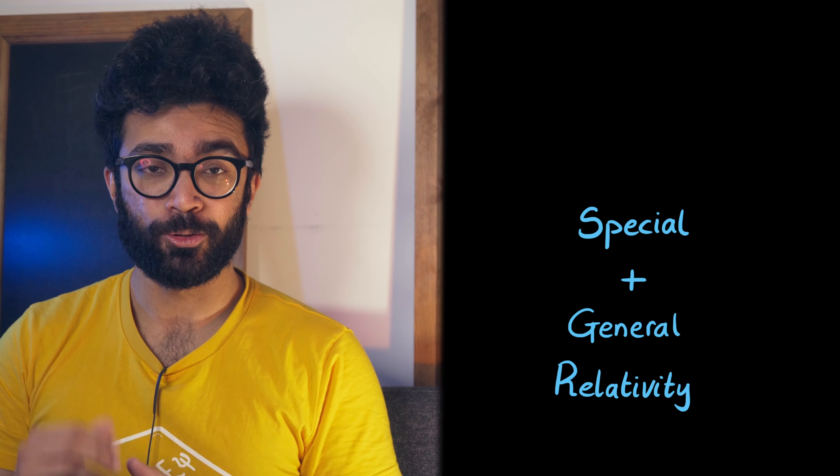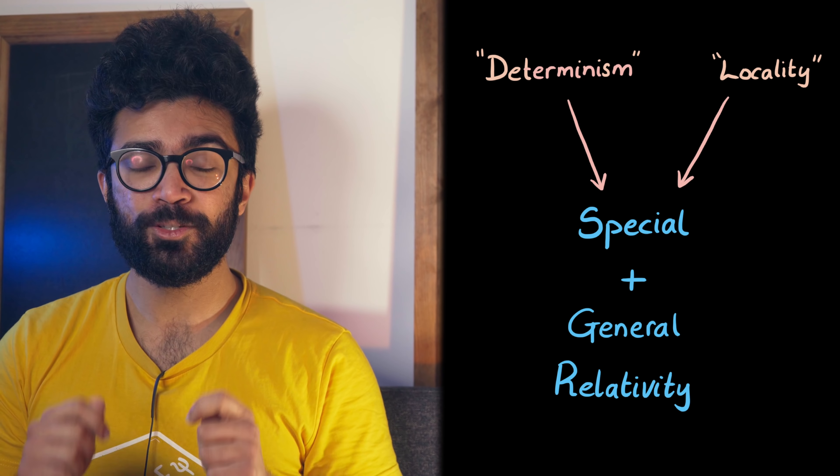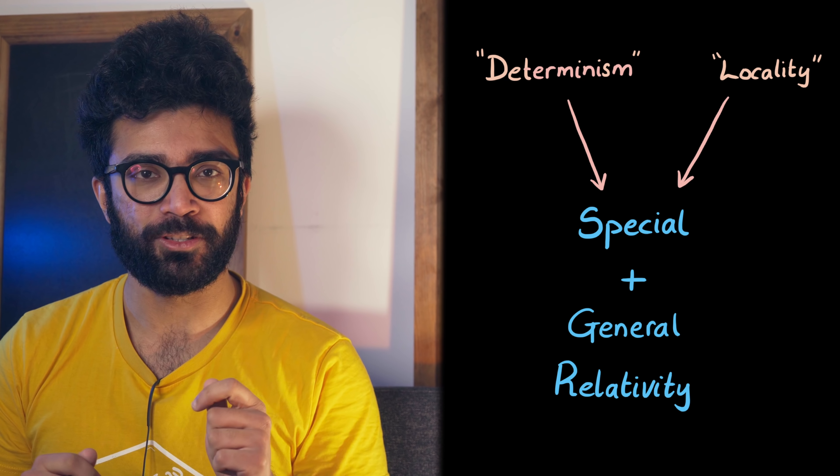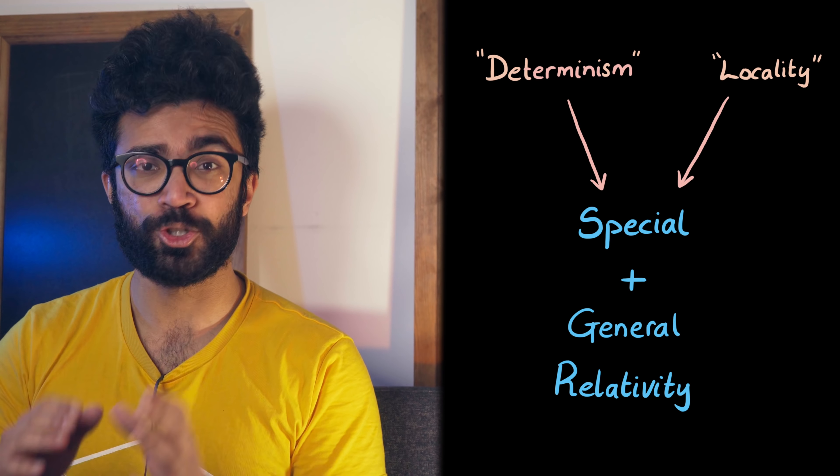Now, we can ask the question, why was Einstein so against the idea that a measurement causes a random collapse into a particular measurement state? The answer to that is that he had very successfully described the universe on a large scale using his special and general theories of relativity, two theories that were both deterministic and local. And these were the key to his understanding of how the universe works, and to some extent, his idea on how the universe should work.